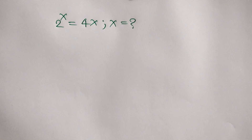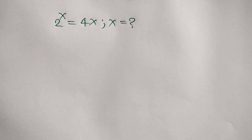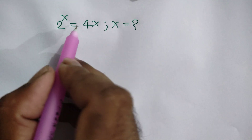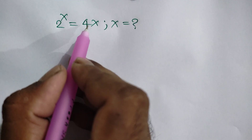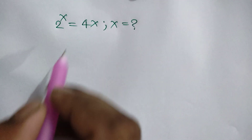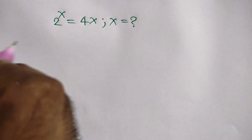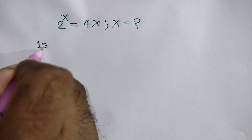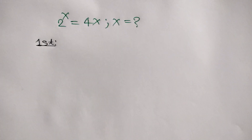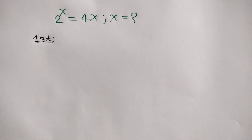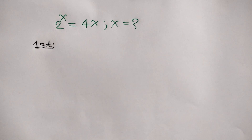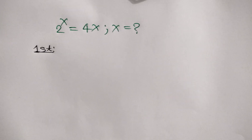Hi everyone. In this video I am going to show how to find the value of x where 2 to the power x is equal to 4x. We have two methods. First method: the question has given 2 to the power x is equal to 4x.